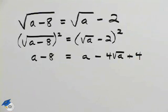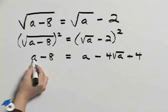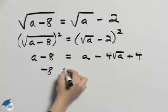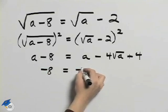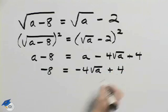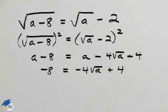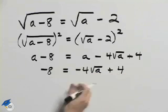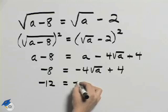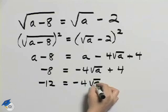When I simplify this, I can subtract a from both sides, and I'll have negative 8 is equal to negative 4 square root of a plus 4. I see then that we still have a radical with the variable, so I'm going to subtract 4 from both sides, and I'll get negative 12 is equal to negative 4 times square root of a.